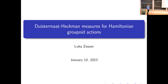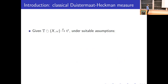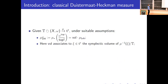As the title says, I will talk about Duistermaat-Heckman measures today. Classically, this is given in the context of Hamiltonian torus actions. At regular points of the moment map, when you push forward the Liouville measure on X by the moment map, what you get is a measure on the dual of the Lie algebra, given by a nice function times the Lebesgue measure. This function 'vol' associates to an element of the dual of the Lie algebra the symplectic volume of the corresponding reduced space.